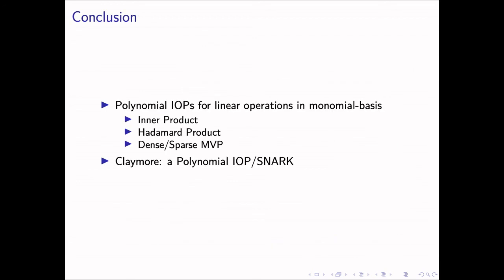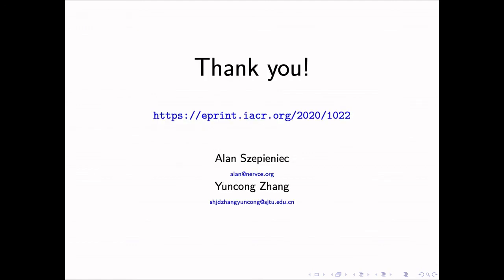In conclusion, this work shows the possibility of constructing polynomial IOPs for linear algebra operations in monomial bases, including inner products, Hadamard products, and matrix vector products. Composing them together, we get Claymore, a polynomial IOP that can be compiled into SNARKs for verifying circuits' computations. Compared to SNARKs in the Reed-Solomon code bases, our SNARK has competitive efficiency and no longer requires the finite field to have a nicely structured subset of proper size. Thank you for watching this talk. For more details, please read our paper, which is available on ePrint.